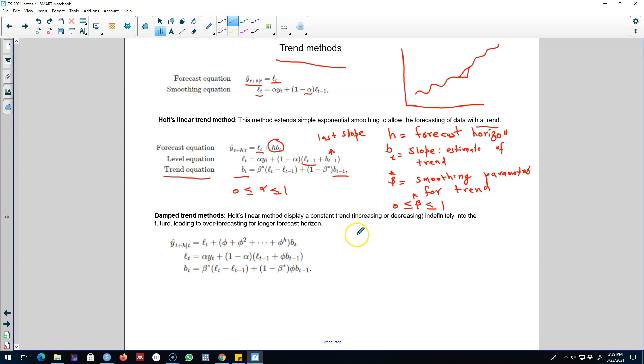The previous method that we saw shows that the trend is constant. That is, if the trend is increasing, it will keep on increasing in the future as well. For example, if we have a time series like this.